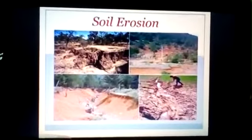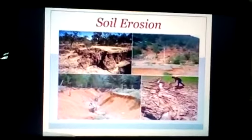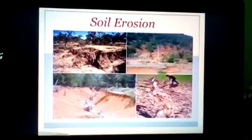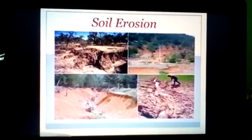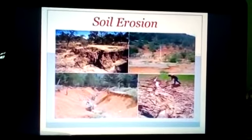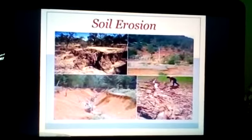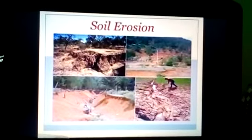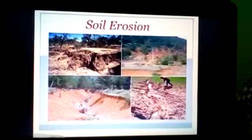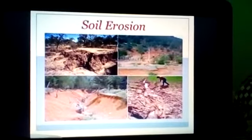Do you know what is meant by soil erosion? The removal of land surface by water, wind, or ice is known as erosion. You can see in the picture how soil is removed from the top surface in the absence of plants. When plants are cut, soil becomes loose and can be moved by wind and flowing water.